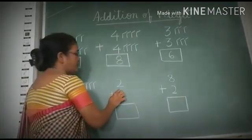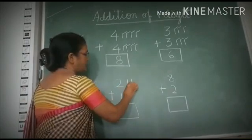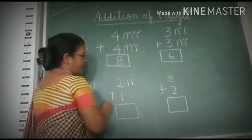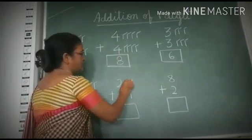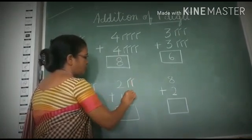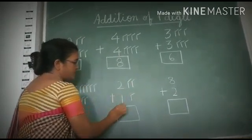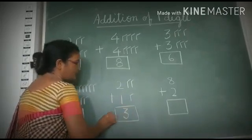This is number 2. 1, 2. This is 1. Draw 1 line. Count all the lines together. 1, 2, 3. So 2 plus 1 is 3.